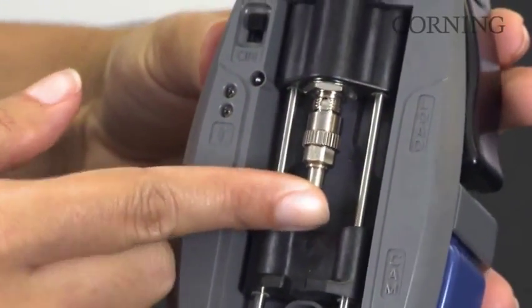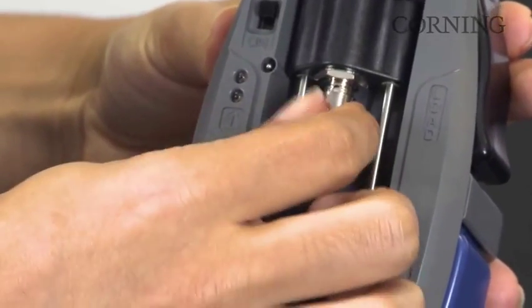Once aligned, apply slight inward pressure to mate the threads and tighten securely with your fingers, rotating the ridged portion of the ferrule adapter clockwise.